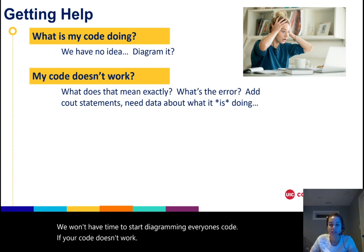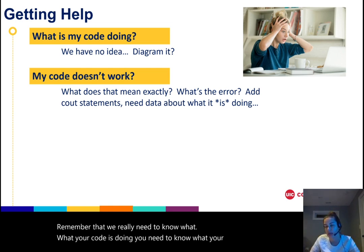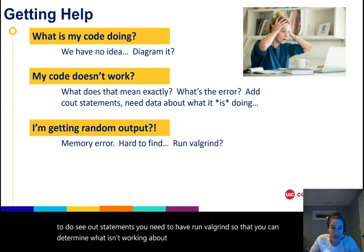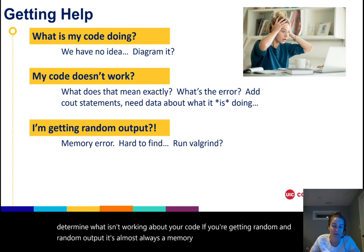Remember that we really need to know what your code is doing. You need to know what your code is doing. You need to do cout statements, you need to have run valgrind so that you can determine what isn't working about your code. If you're getting random output, it's almost always a memory error, and you will get random output.